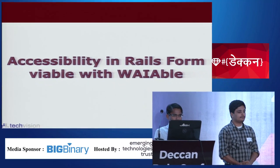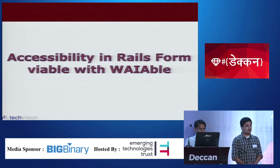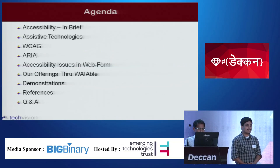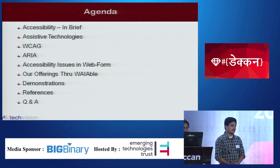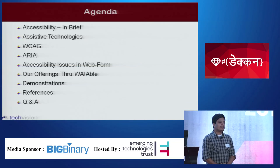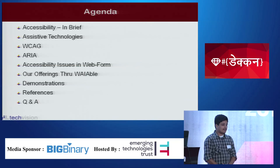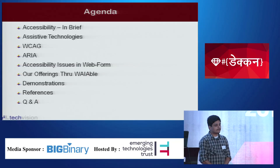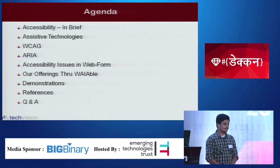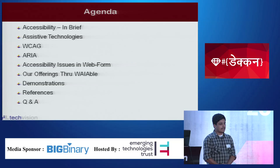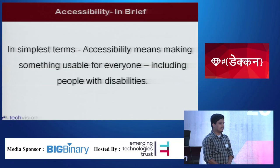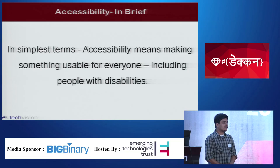Before going to the topic of Viable, we are going to demonstrate the Viable gem and how it is making Rails forms accessible. But before that, I would like to give a brief on accessibility, web accessibility, assistive technologies, and different web accessibility standards. This will help us understand the functionality of Viable gem and why accessibility is important in the Rails framework. So, what is accessibility?